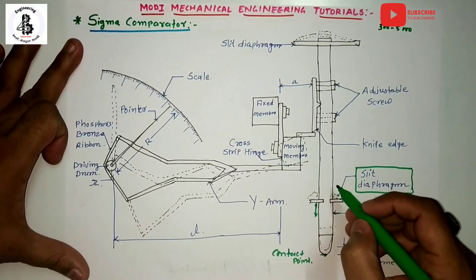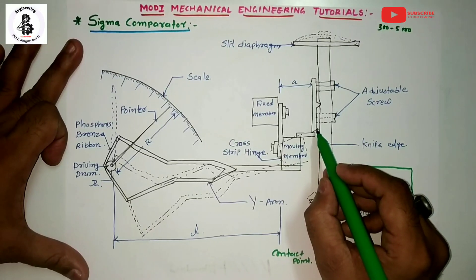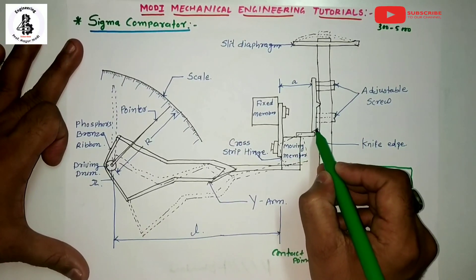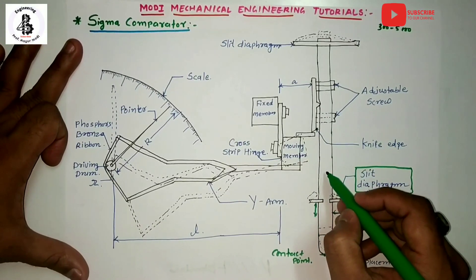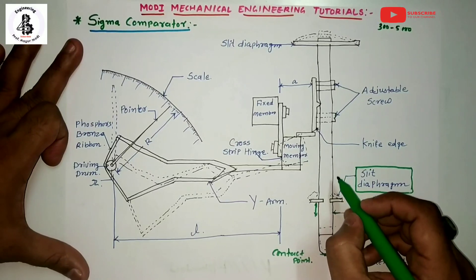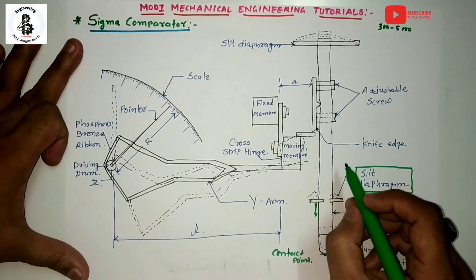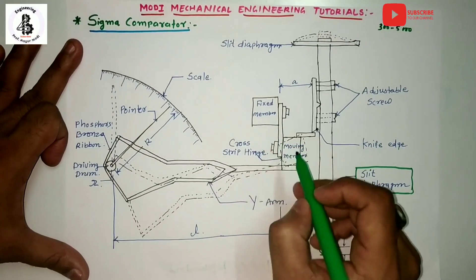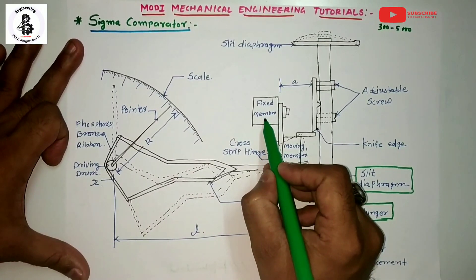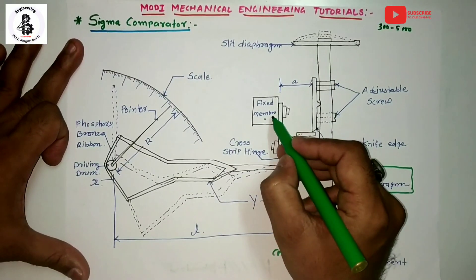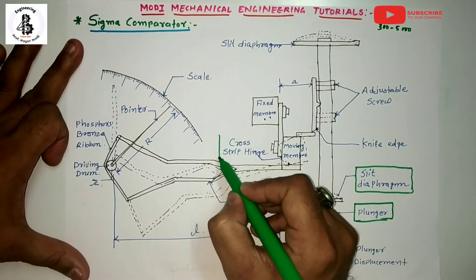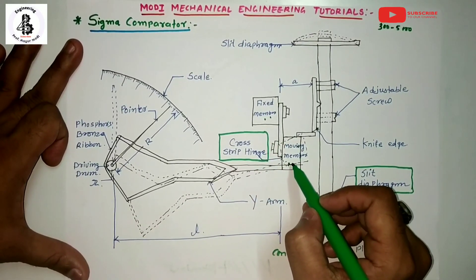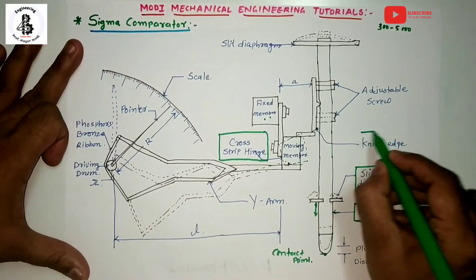The plunger carries a knife edge which bears upon the face of the moving block. The moving block is part of a cross strip hinge, which consists of a moving member and a fixed member connected together. This cross strip hinge makes a bridge between the fixed member and the moving member, and the face of the moving member connects with the knife edge.